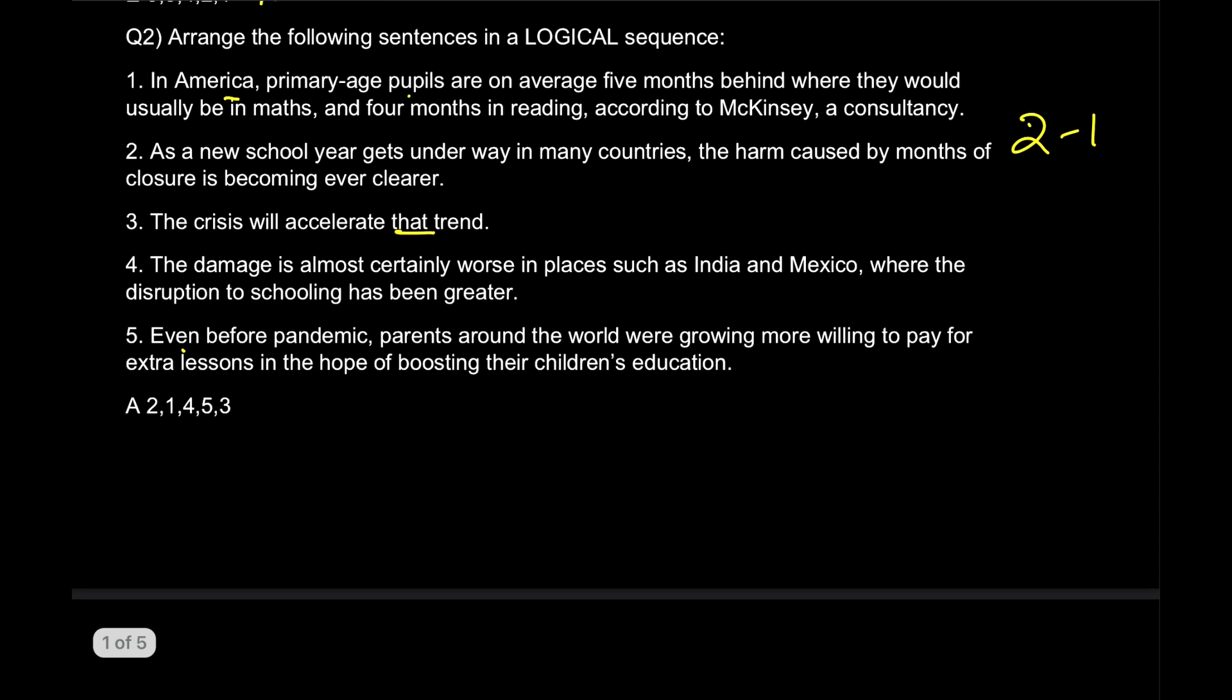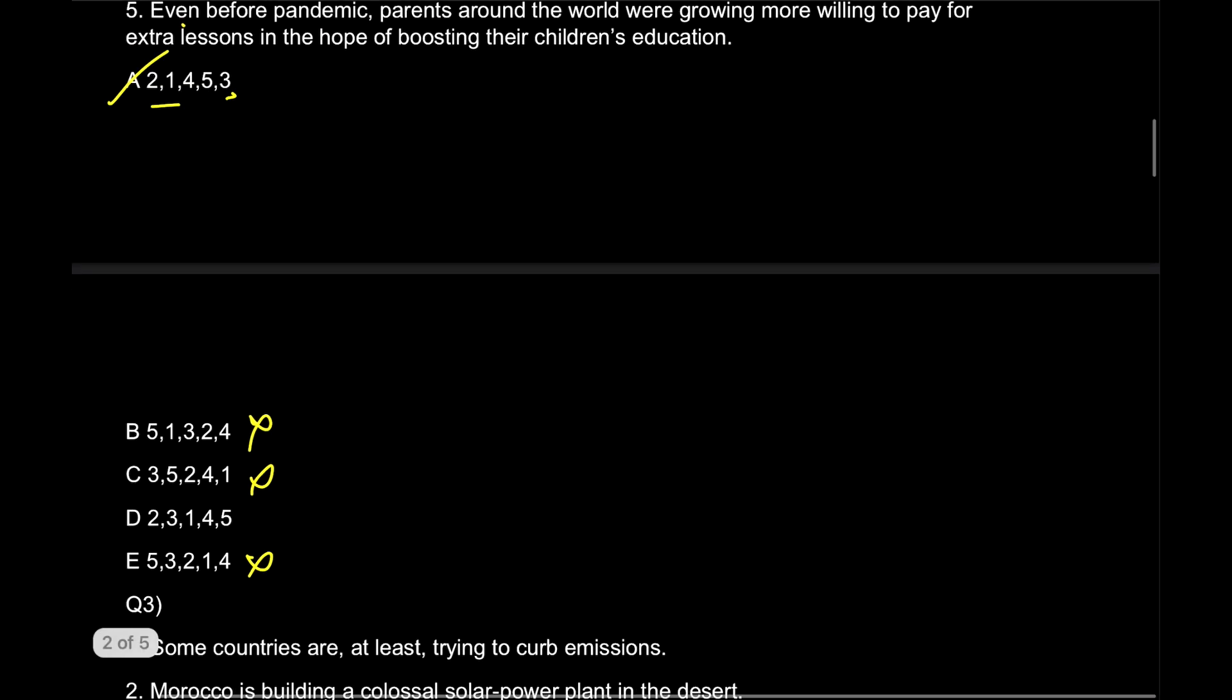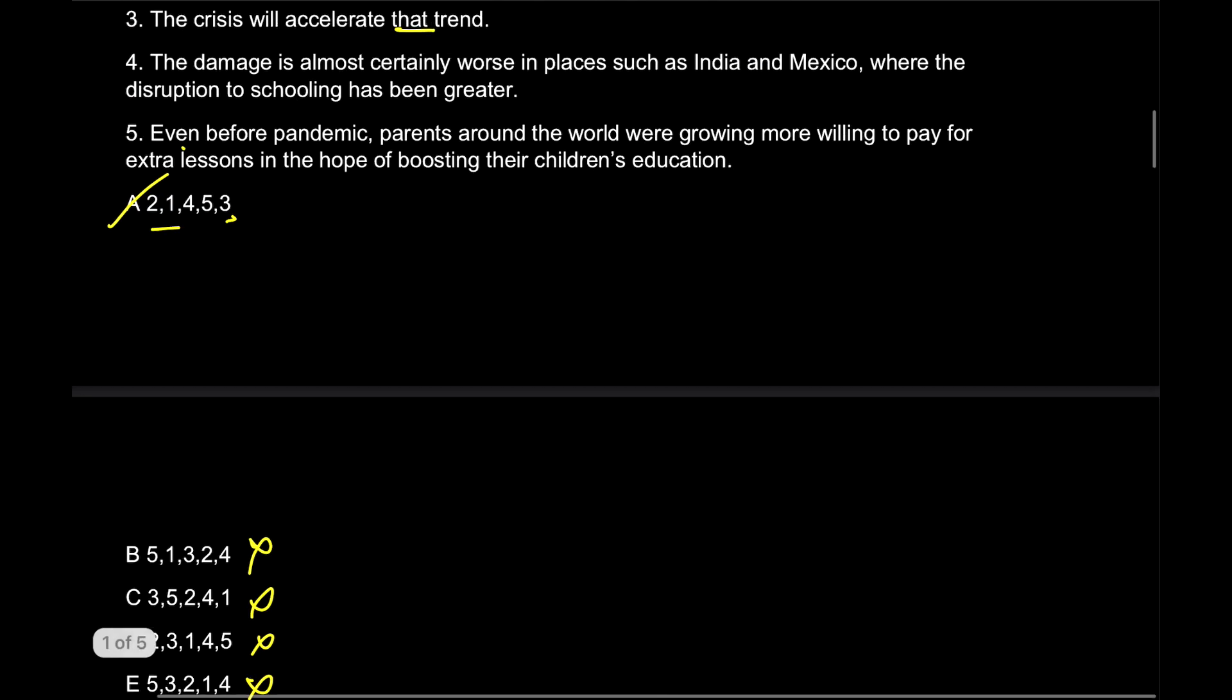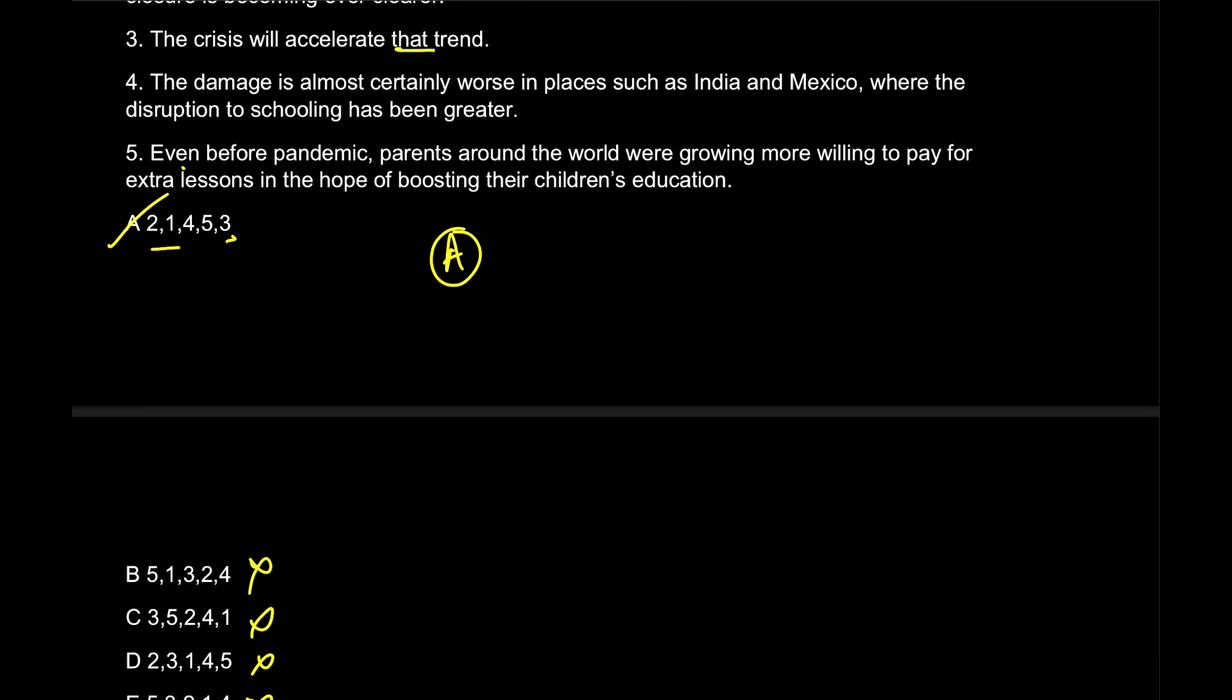But then I'll just check two and three also. 'The crisis will accelerate that trend.' Again, sentence three is not directly connected to sentence two. It's not a part of sentence two. So we can't see the connection. This is basically an ending sentence, what we can appropriately say. Therefore my answer would be option A. This will be at the end, and these two will go together.